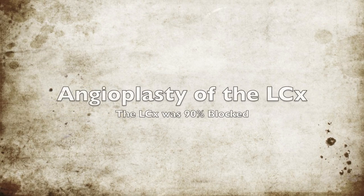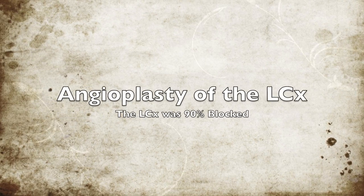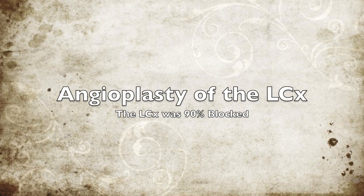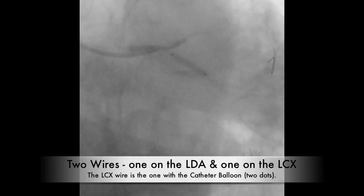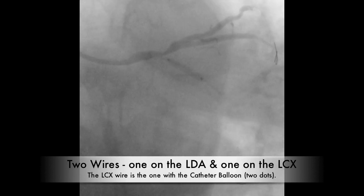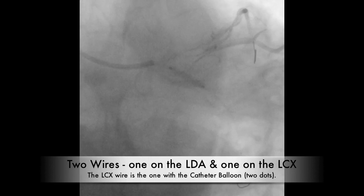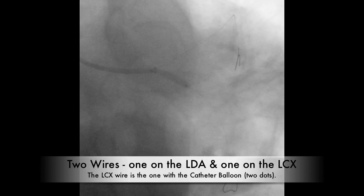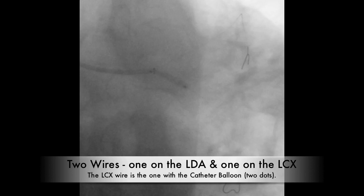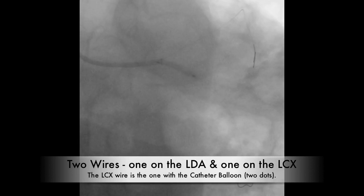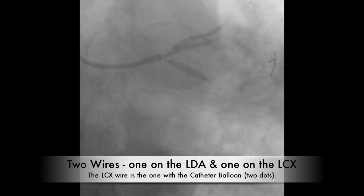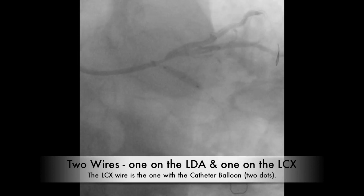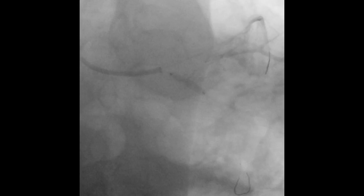Now we're going to look at the angioplasty procedure — the ballooning or inflation of the balloons. The angioplasty of the LCX or circumflex artery, which is 75–90% blocked. There you see the catheter balloon being pushed back. The catheter balloon has two dots on it so you can see them expanding it out at the junction where it was really thin.